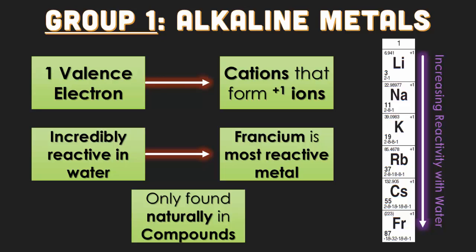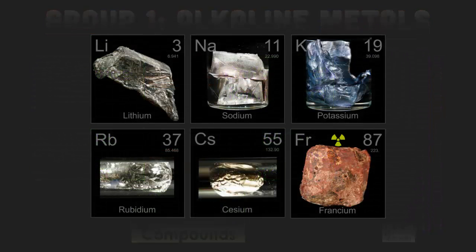However, since these elements are so reactive, they are only found naturally in compounds. If you have a pure potassium or rubidium sample, it would immediately explode or react violently with water. This is what the different elements look like: lithium, sodium, potassium, rubidium, cesium, and francium. But francium is in a compound, so that's why it looks like that reddish rock. Also, francium is incredibly radioactive. Notice that some of them are also in containers — the only way to contain them so they don't react with the environment around them is to keep them under oil.